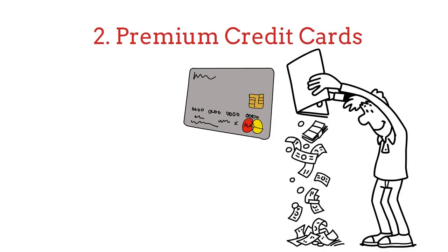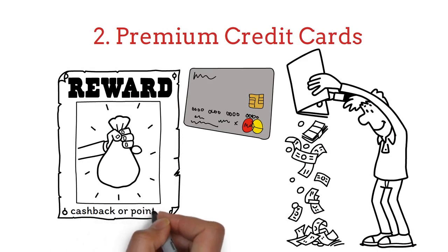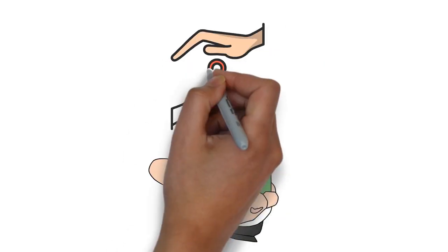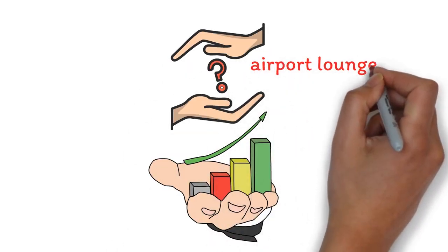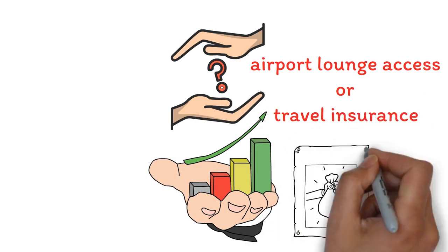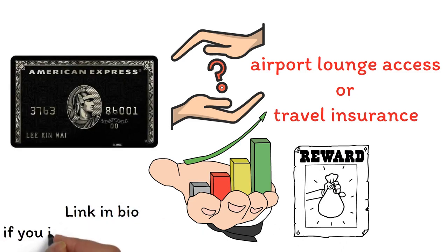Two, premium credit cards. Premium credit cards usually come with higher fees but also offer more rewards such as cashbacks or cards that can be redeemed for travel. They also have higher credit limits and may offer other perks like airport lounge access or travel insurance. Example of a credit card with such rewards is the American Express card. Link in bio if you intend to check it out.